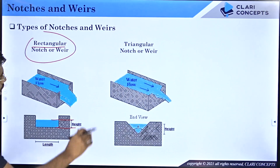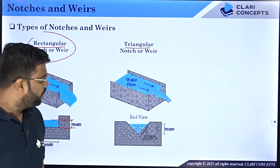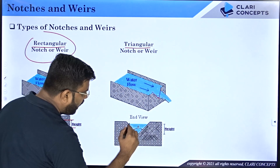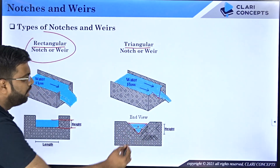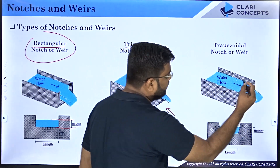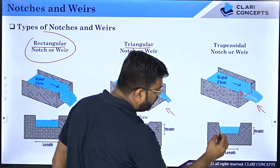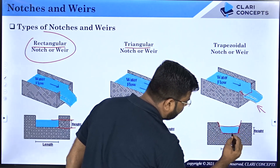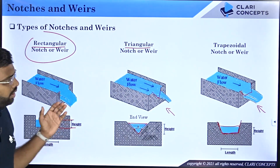Another type is the triangular notch, also known as a V-notch, where the shape of the opening is V-shaped or triangular. Water flows up to a certain height and forms a triangular cross-section with an angle theta. There is also the trapezoidal notch or weir, where the cross-sectional shape is a trapezium — when viewed from the front it has slanted sides, giving it a trapezoidal shape.